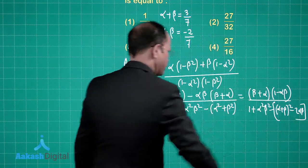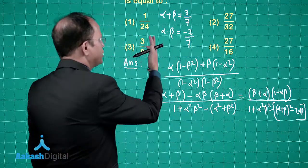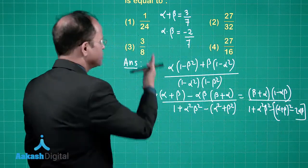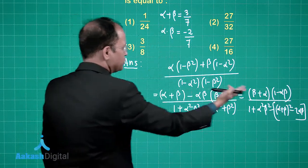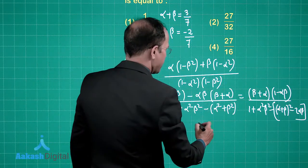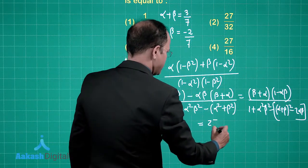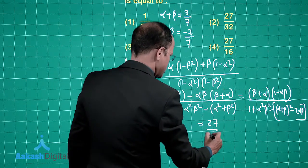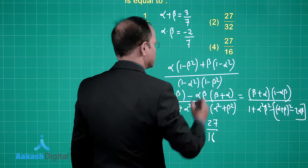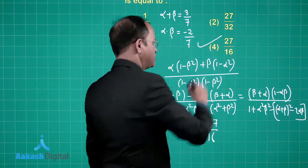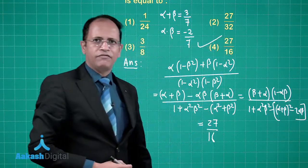Substituting the values of (α+β) = 3/7 and αβ = -2/7, we get 27/16 as the final answer.